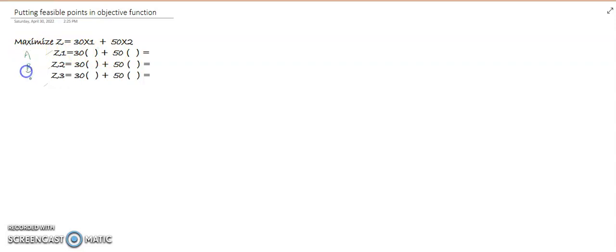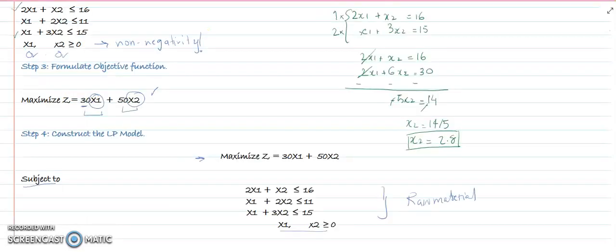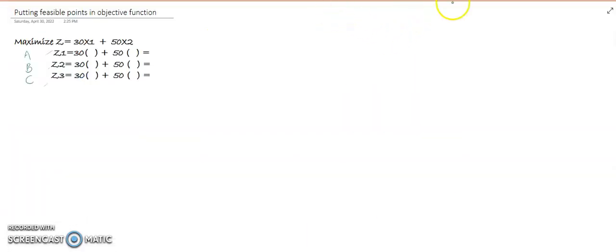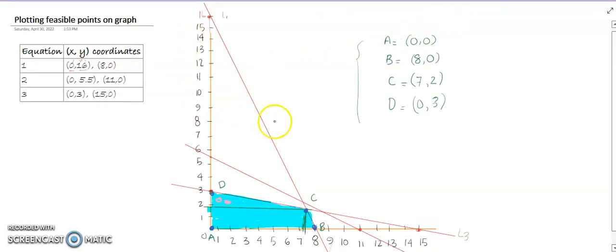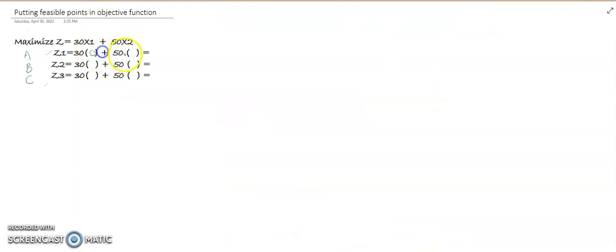We have to find out which gives the maximum profit. This is the objective function with equations 1, 2, 3, and we will do this way: corner point A, B, C, and D.